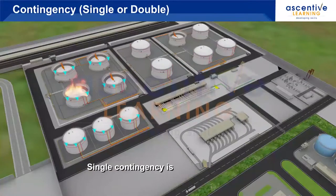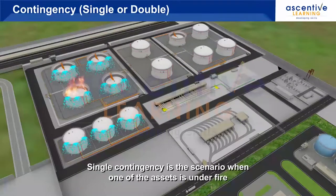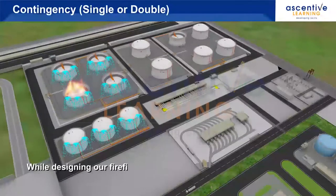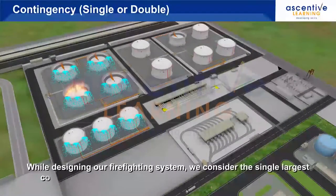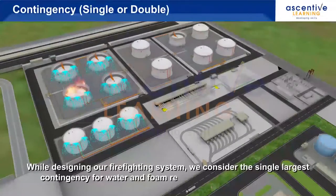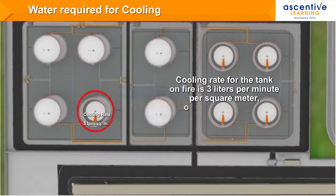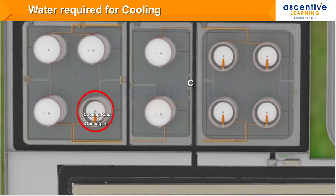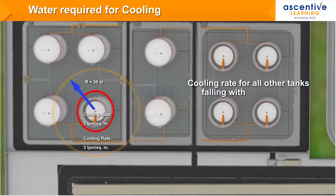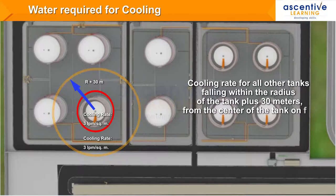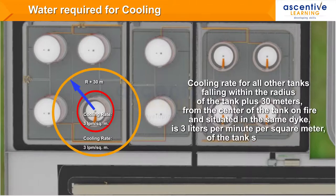Single contingency is a scenario where one of the assets is under fire. While designing our firefighting system, we consider the single largest contingency for water and foam requirement and pumping rates. The cooling rate for the tank on fire is 3 liters per minute per square meter of the tank shell area. The cooling rate for all other tanks falling within the radius of the tank plus 30 meters from the center of the tank on fire, and situated in the same dike, is also 3 liters per minute per square meter of the tank shell area.